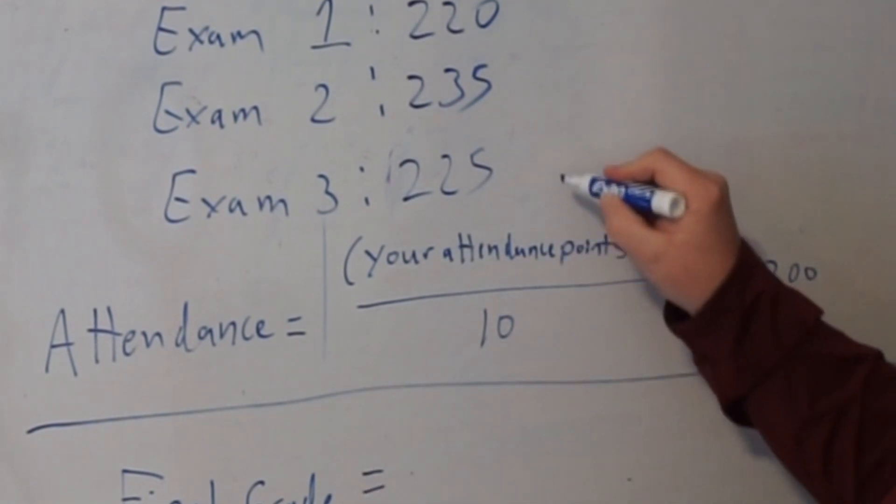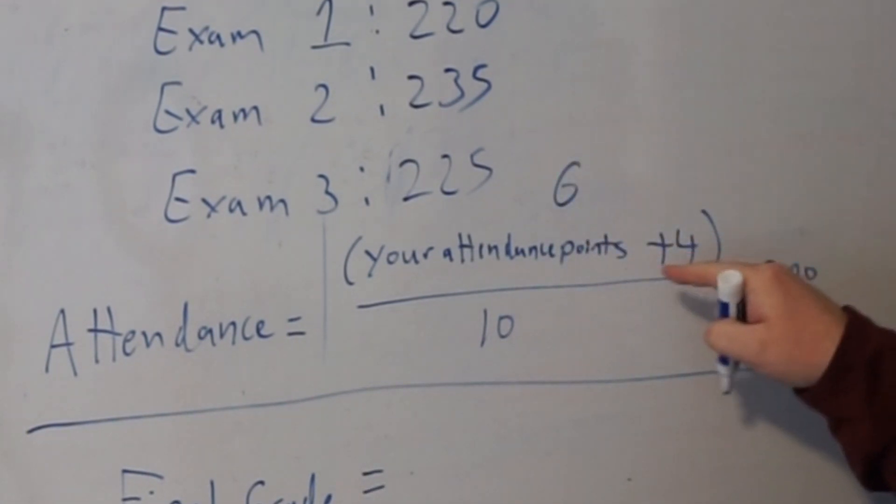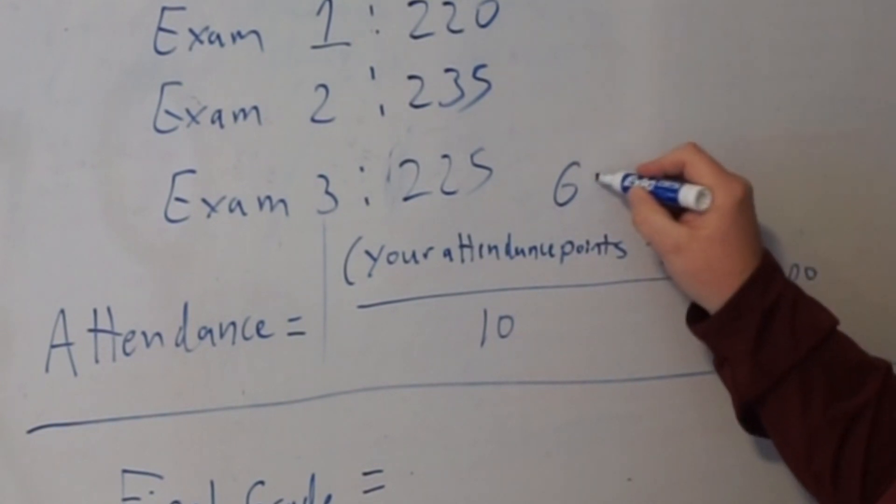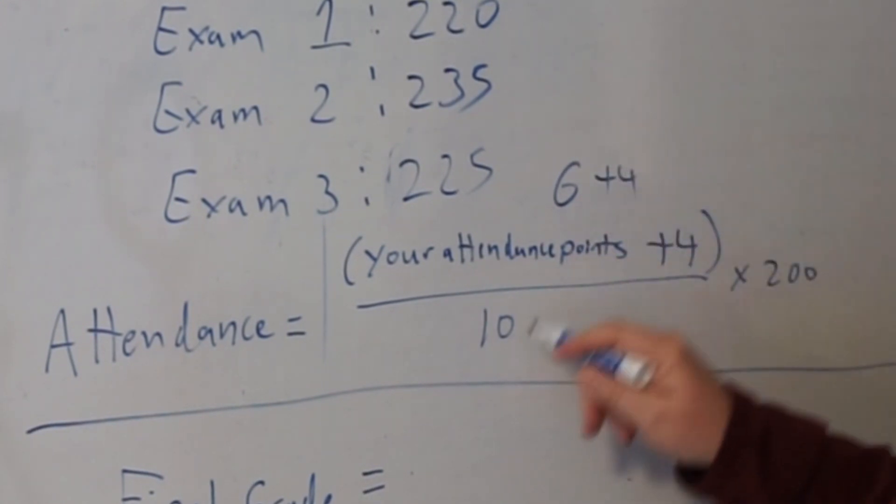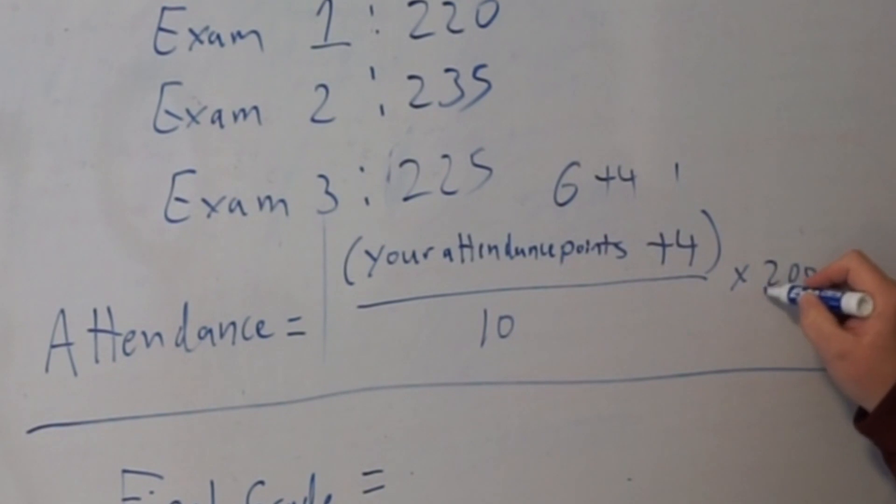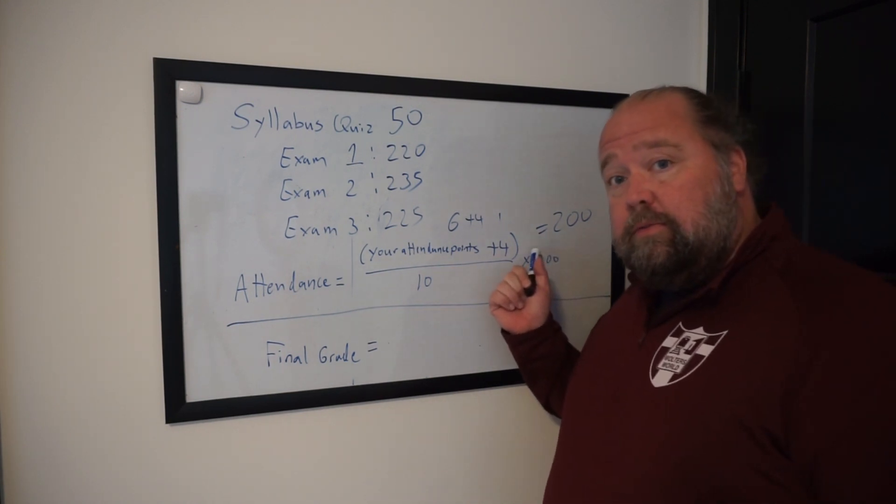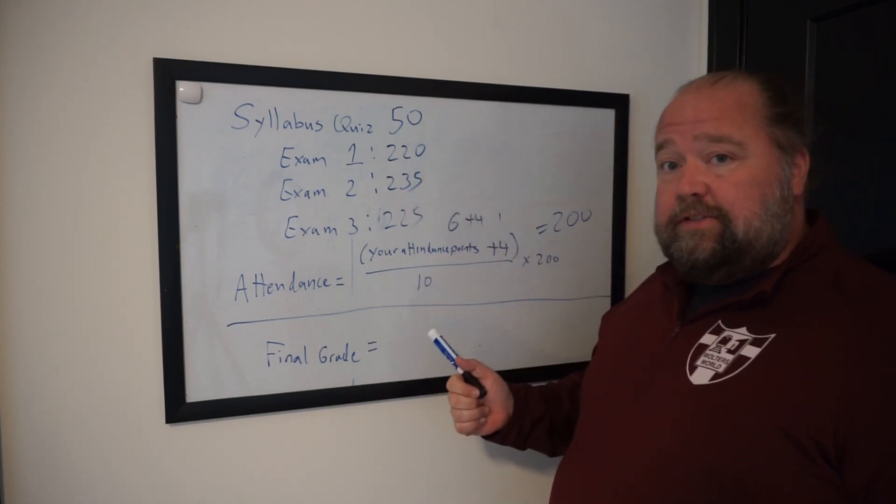So you got that 6, and then we have our 4-point curve. So you add 4 onto there, so that gives you a 10. So 10 divided by 10 is 1, and 1 times 200 means you get 200 points here. So now that we have our 200 points that we earn from our attendance grade, we add all these together.